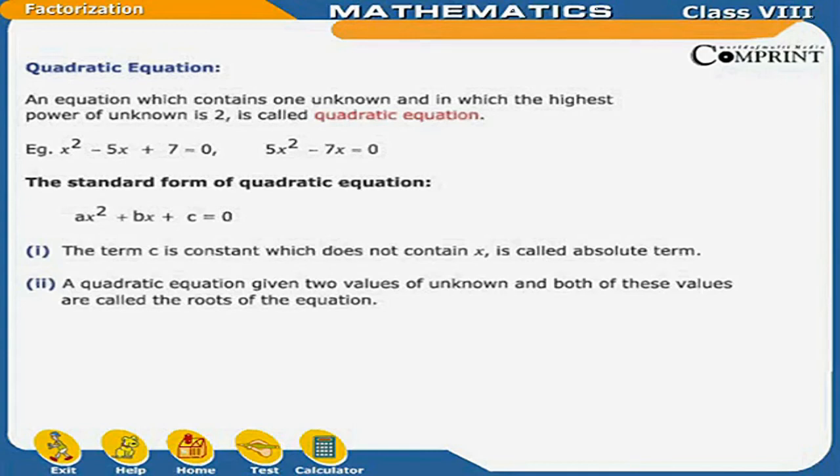x square minus 5x plus 7 is equal to 0, or 5x square minus 7x is equal to 0. The standard form of quadratic equation: ax square plus bx plus c is equal to 0.